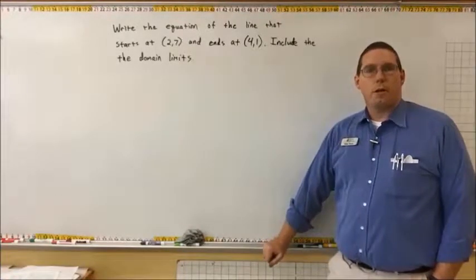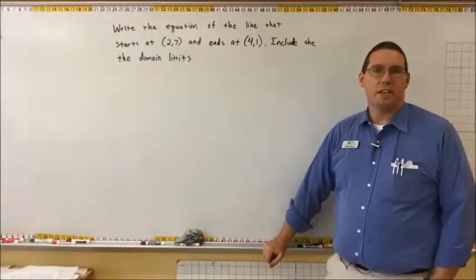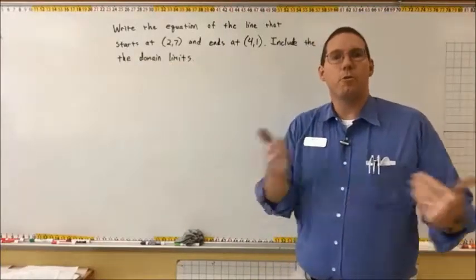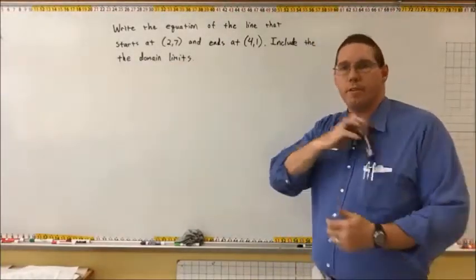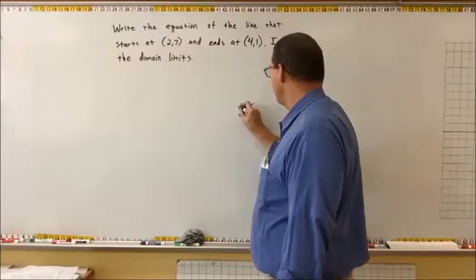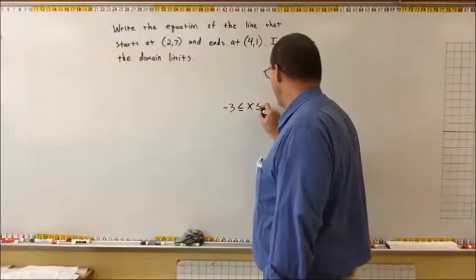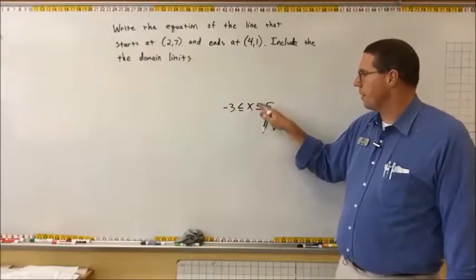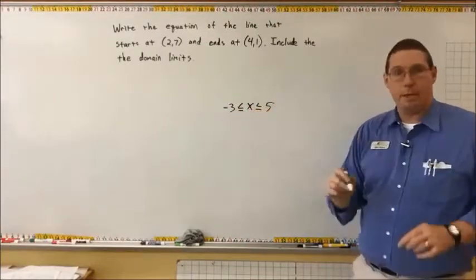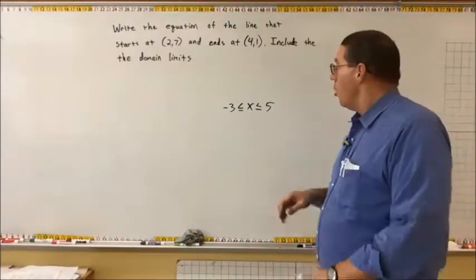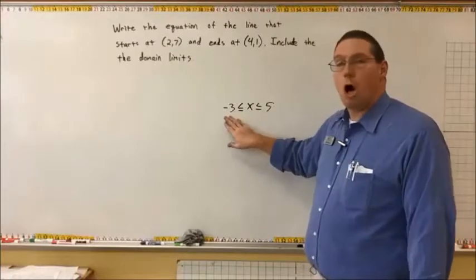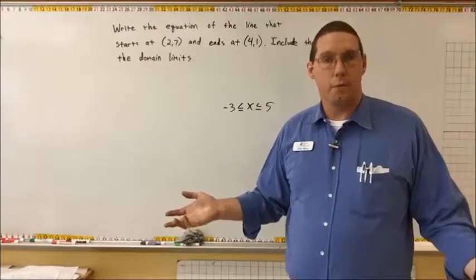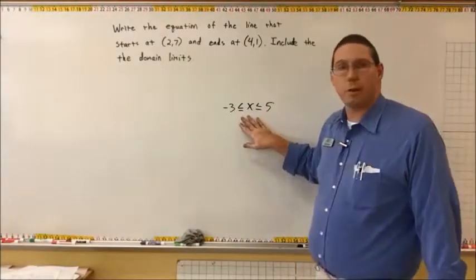What we're going to talk about in this video is how to write the equation of a line that has domain limits. When I say domain limits, I'm referring to something like x is between negative 3 and 5 inclusive, written as x is greater than or equal to negative 3 but less than or equal to 5. This is a domain limit — we're only plugging in values as small as negative 3 or as large as 5. This is a restricted or limited domain.